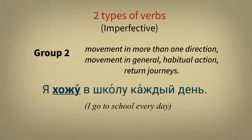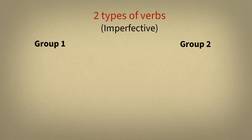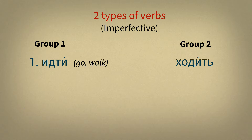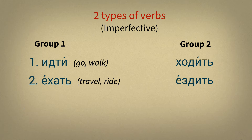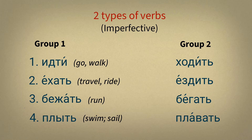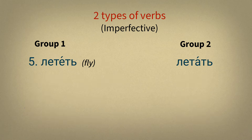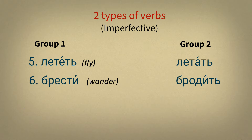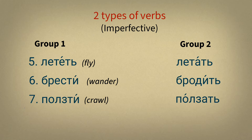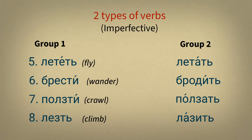There are 14 verbs of motion. Let me give you some of them that will be mentioned in our lesson. All verbs you can find in the PDF document of the lesson. The first group: идти. The second group: ходить. The first group: ехать. The second group: ездить. Бежать – Бегать. Плыть – Плавать. Лететь – Летать. Брести – Бродить. Ползти – Ползать. Лезть – Лазить.